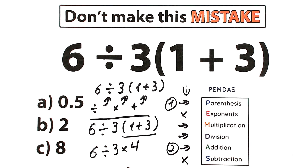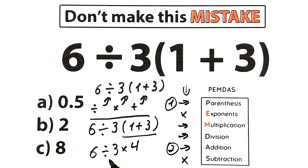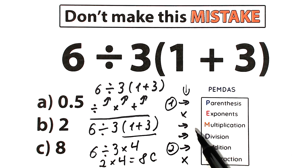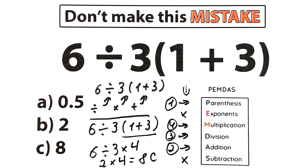What is our next step? We should multiply or divide. As I said, PEMDAS works from left to right for multiplication and division. Division is the first sign from left to right, so we solve in strict order from left to right. 6 divided by 3 equals 2. Then 2 times 4 equals 8. Option C — this is the correct answer.